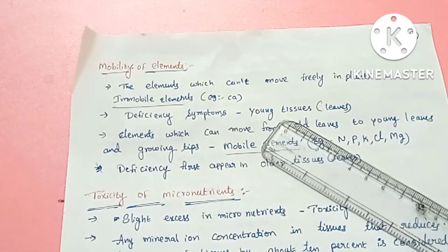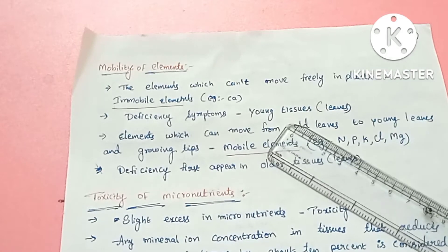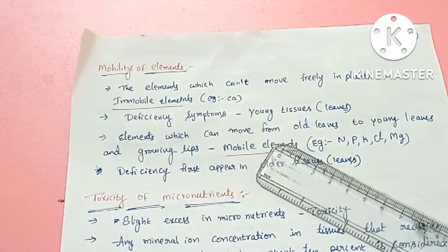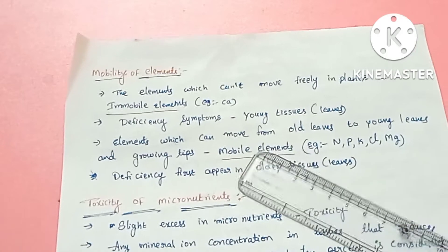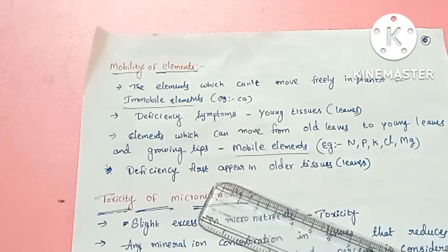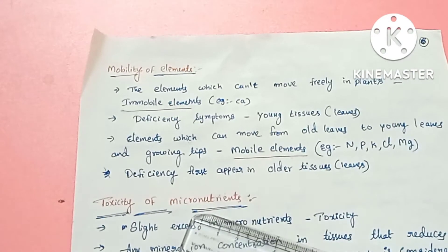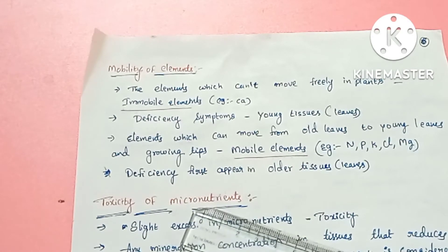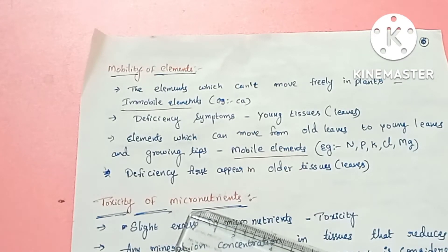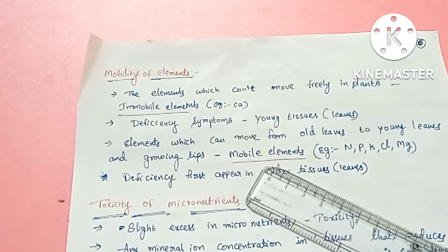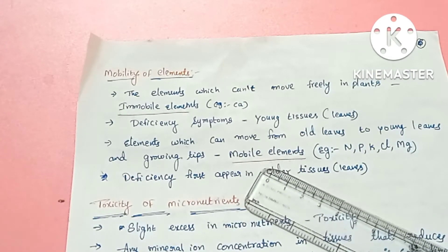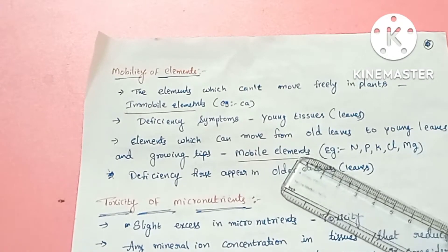Young tissues, young regions, tender growth areas — all elements need to be healthy in these areas. The deficiency symptoms appear very fast in young leaves. Elements which can move from older leaves to young leaves are translocated from senescing, falling, or dead parts to young growing tips.